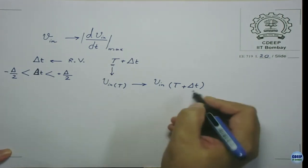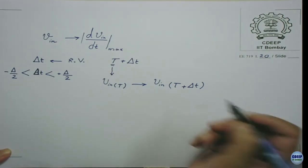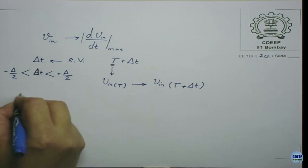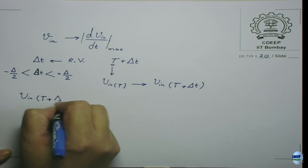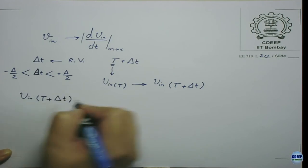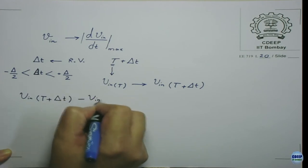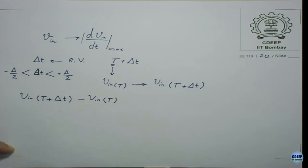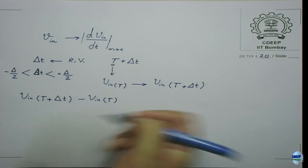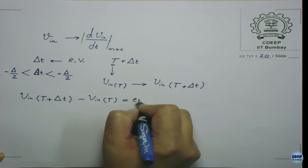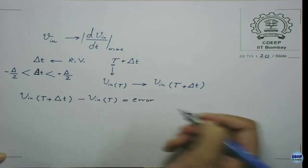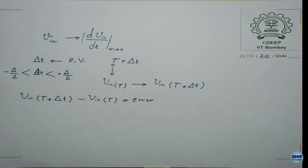The actual sampled value is Vin(t + delta_t) instead of the expected Vin(t). The difference — approximately (dVin/dt)·delta_t — is the sampling error, which is a random variable. Effectively, input samples are superimposed with noise: Vin_actual(nT) plus a random aperture error term.